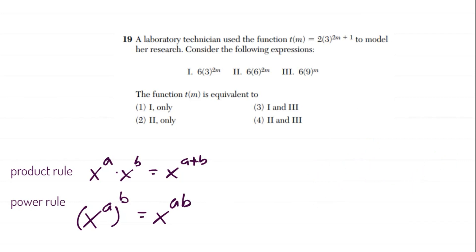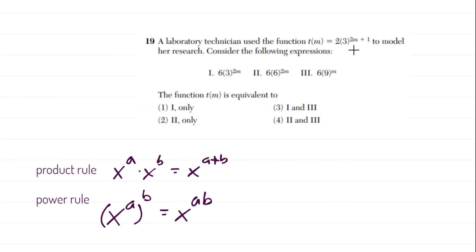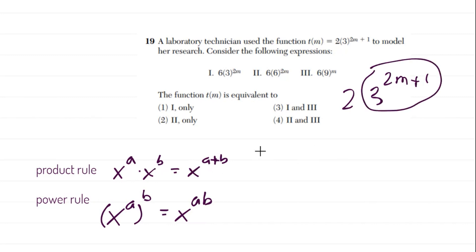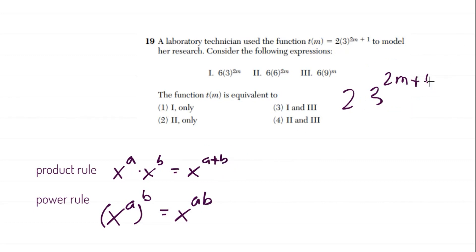With those two rules in mind, let's look at this problem. They're asking which of three expressions is equivalent to the given exponential function. I'm going to leave the two out for a second and focus on 3 to the (2m + 1). This exponent looks just like the product rule where we're adding two things, so we can break it up: that's 3 to the 2m times 3 to the first power, and there's still a two multiplying everything.